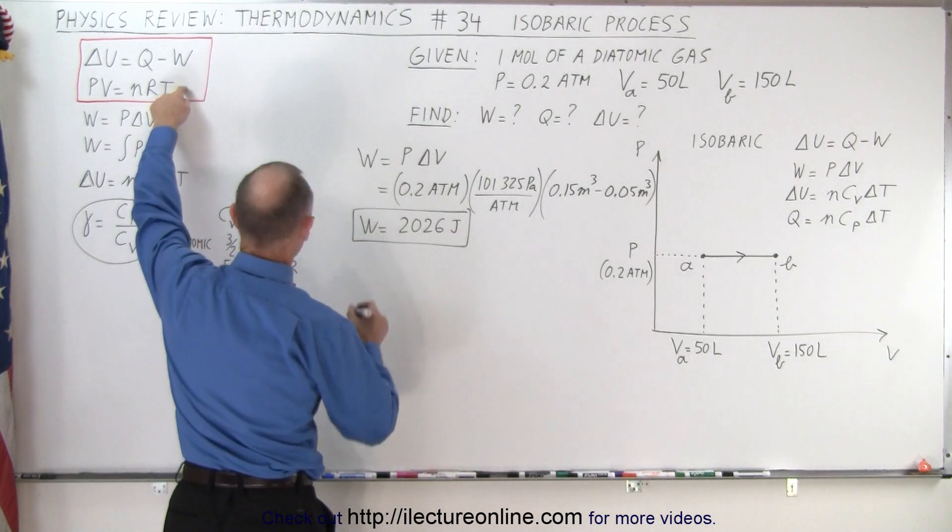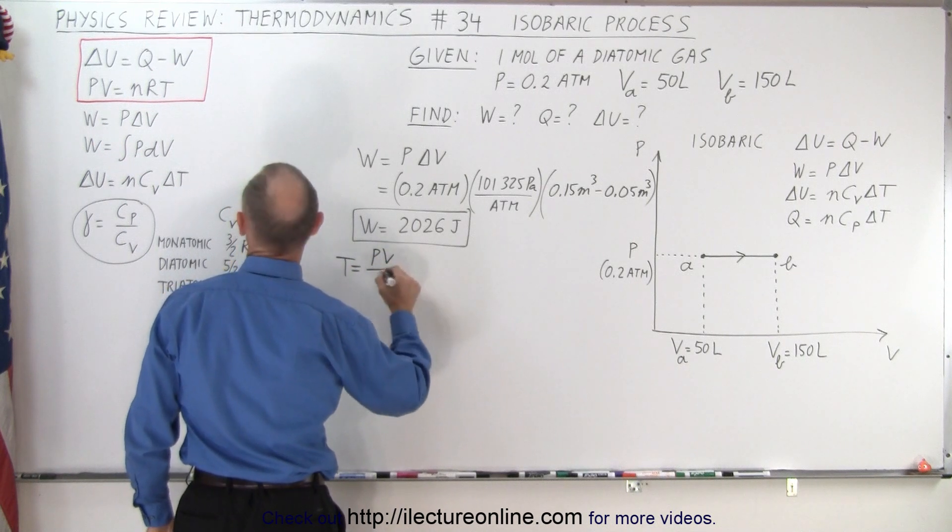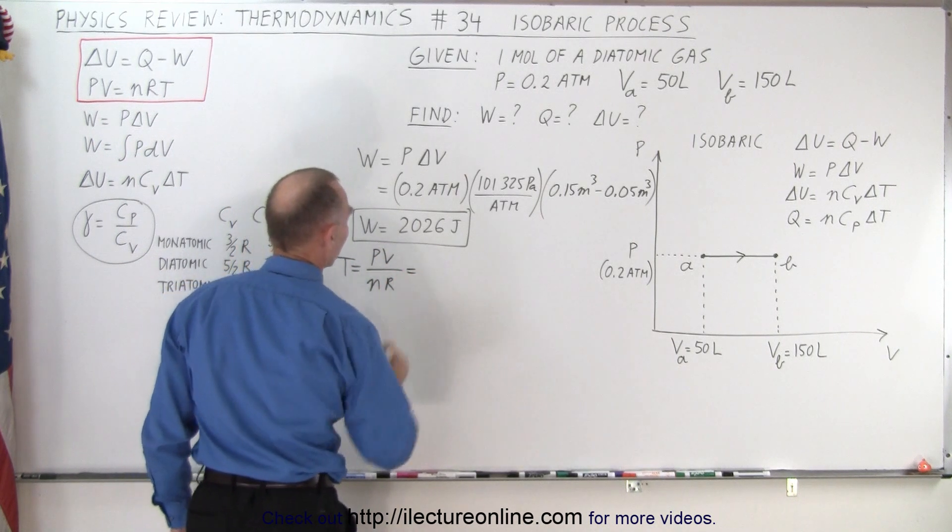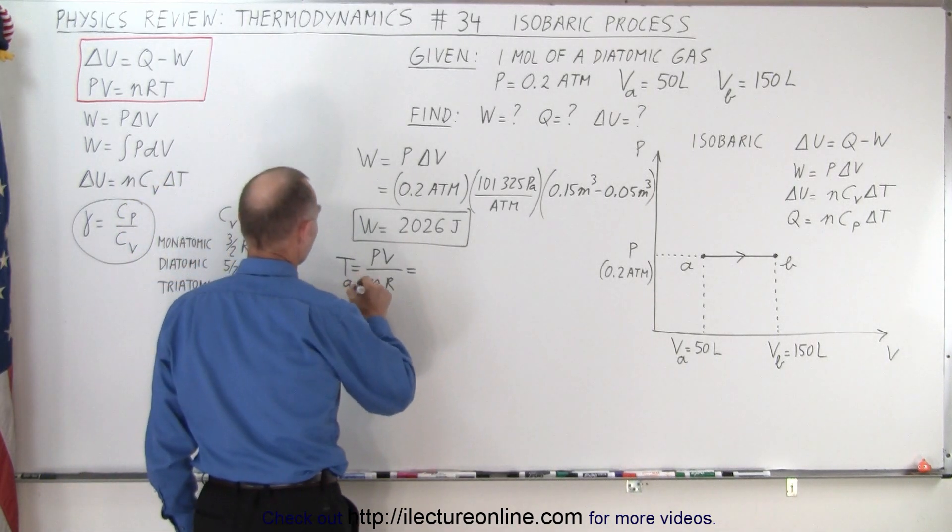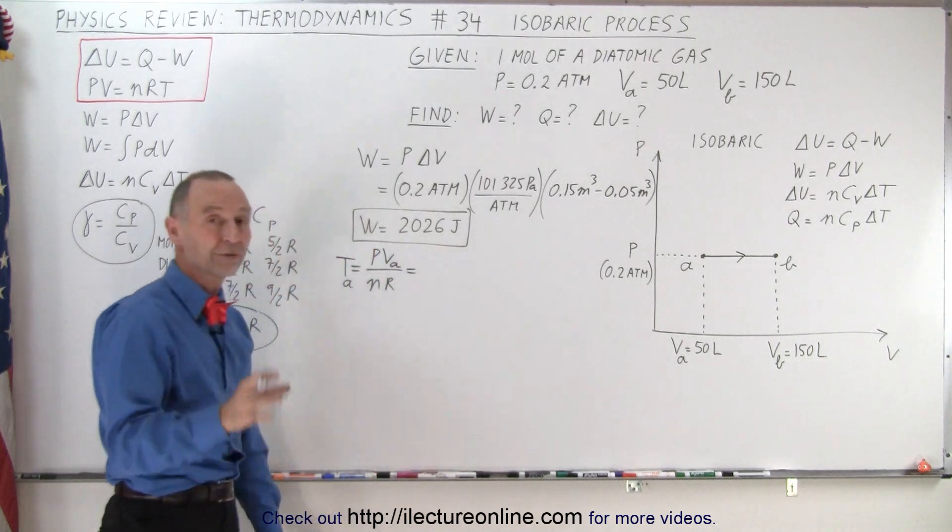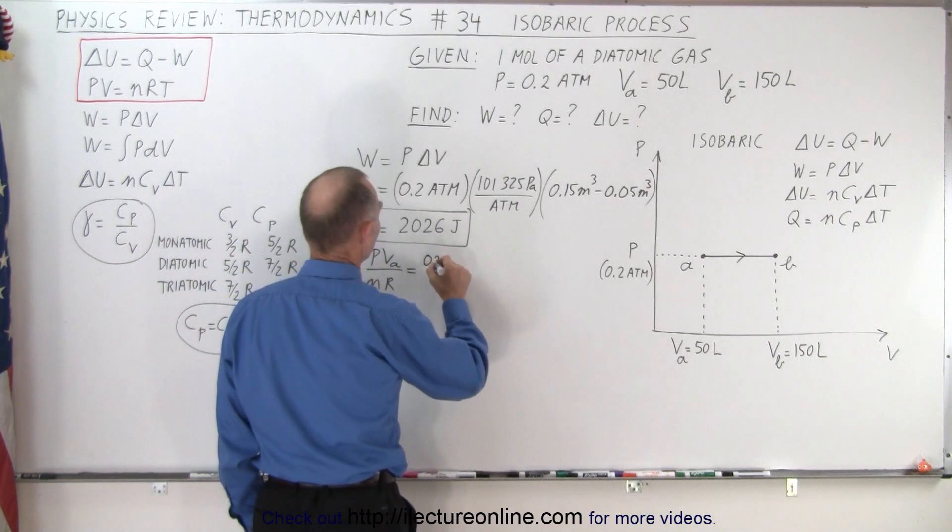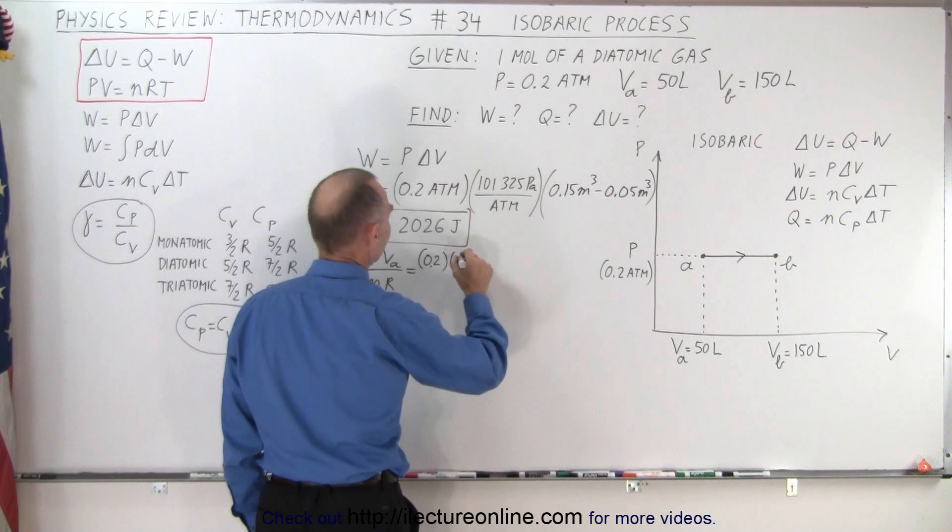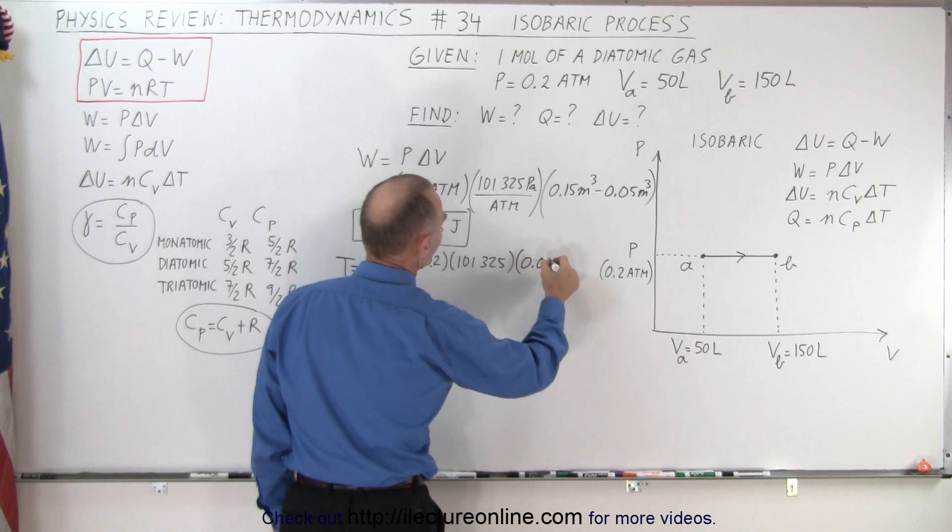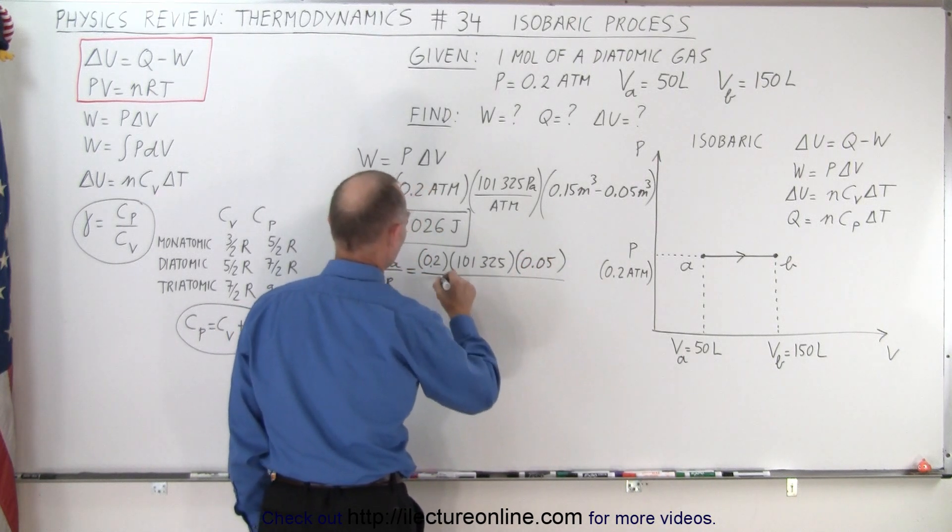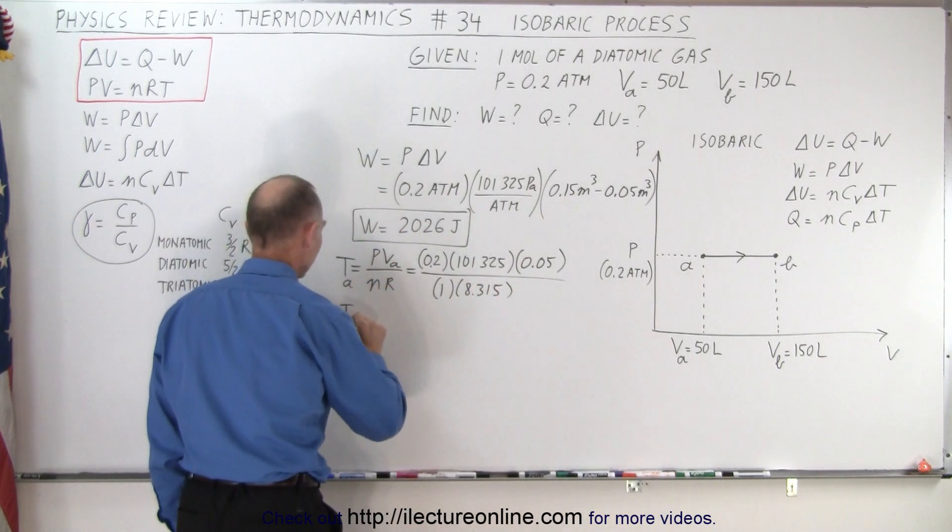We can take this equation and say that the temperature is equal to the pressure times the volume divided by n times R. When we plug in the numbers, we can find the temperature for A or B. If we want to know for A, we need the volume in A. If we want to know for B, we need the volume for B. Pressure will be 0.2 atmospheres, we have to convert that to pascals. The volume at A would be 0.05 cubic meters divided by the number of moles, which is 1, and the gas constant 8.315. That gives us the temperature at A.